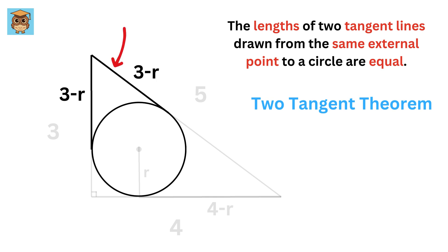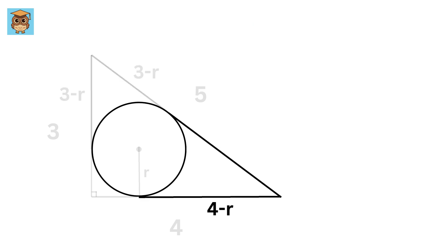So this tangent line will also be 3-r. And the same thing goes for this side. If this is 4-r, then this will also be 4-r.